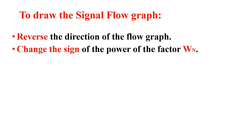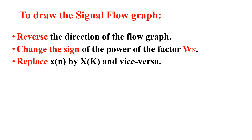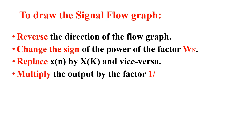We change the sign of the power of the factor W_N. Next, replace x(n) with X(k) at the input side — in DIT FFT we had x(n) at the input and X(k) at the output, so now we replace x(n) with X(k) and X(k) with x(n). Lastly, multiply the output by the factor 1/N, since it appears in the IDFT formula.